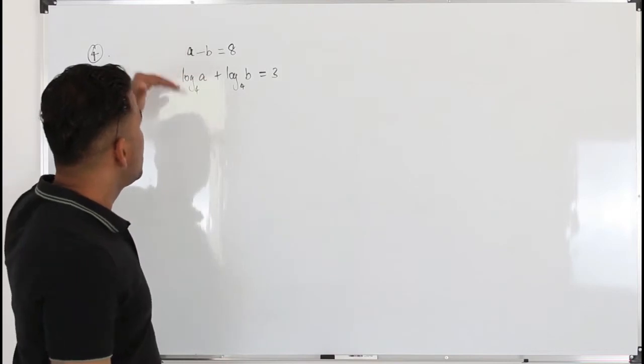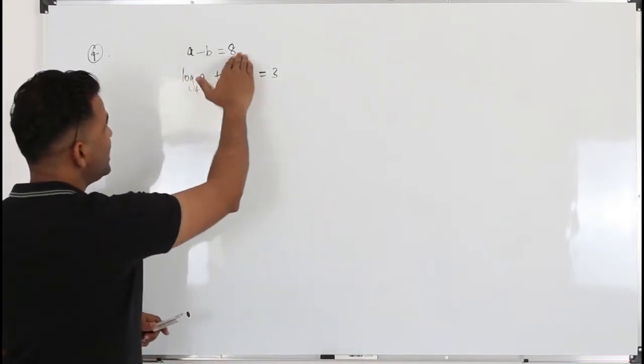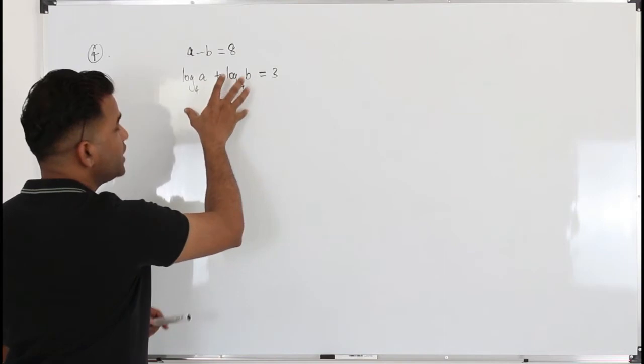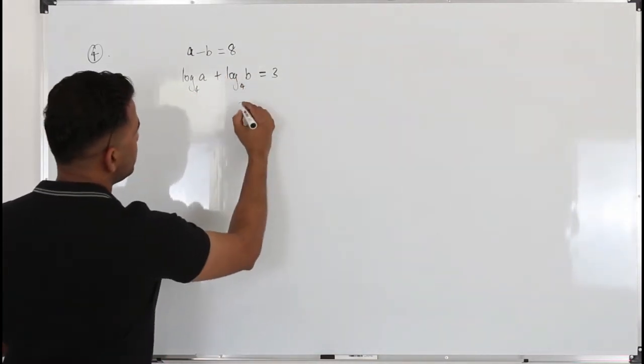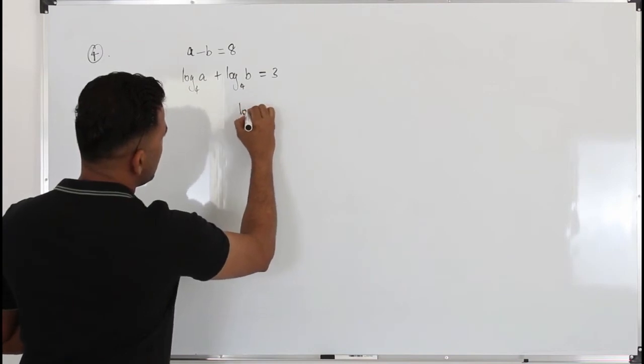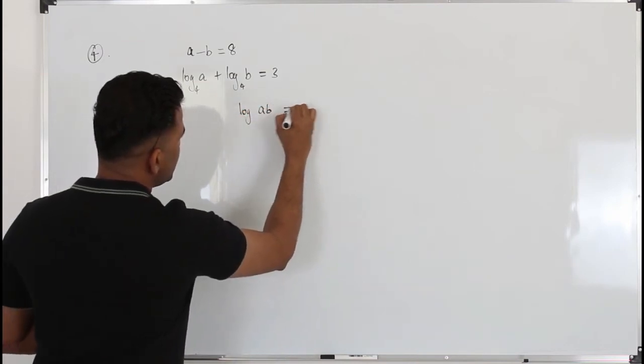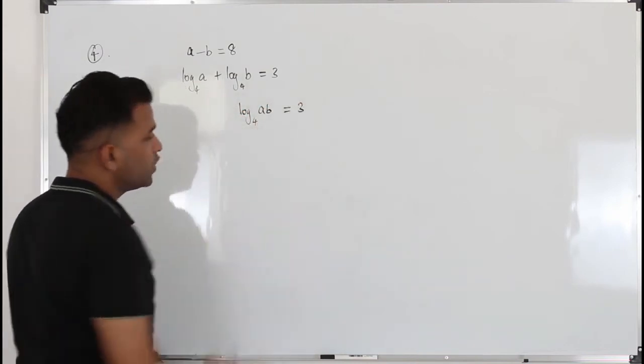Here we are going to solve this simultaneous equation. First one is a linear equation. Here we have to get rid of the logarithm first. Apply the laws of logarithm. Log a plus log b can be written as log ab equals 3 to the base 4.